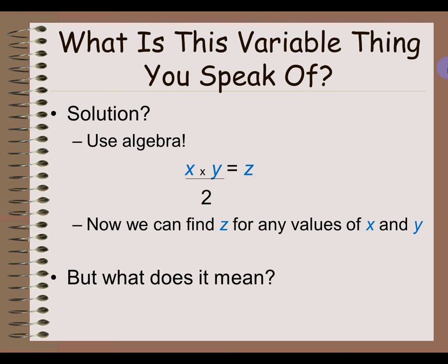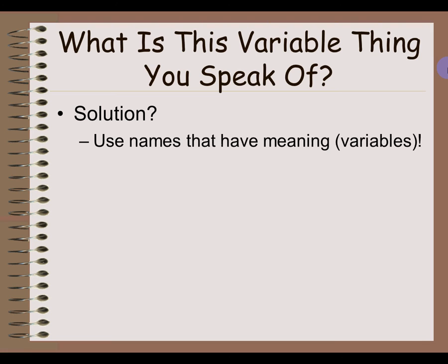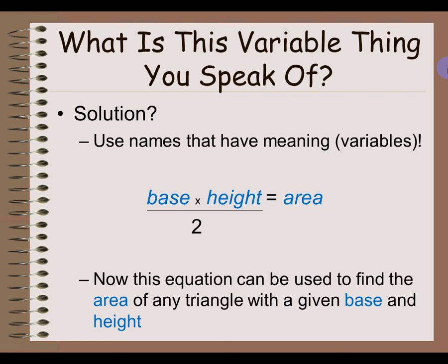So to give it a little bit more meaning, we can use names for those values, which we call variables. By replacing x, y, and z with base, height, and area, we now have a very meaningful calculation where we're calculating the area of a triangle, and we can calculate the area of any triangle with a given base and height.